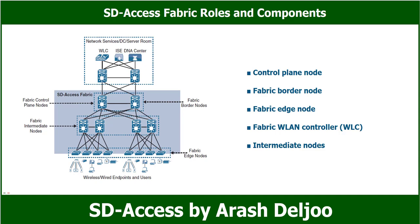The operation of the SD Access fabric requires multiple different device roles, each with a specific set of responsibilities. Each SD Access-enabled network device must be configured for one or more of these roles during the planning and design phase. There are five basic device roles in the fabric overlay: control plane node, fabric border node, fabric edge node, fabric WLAN controller, and intermediate nodes.